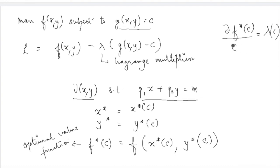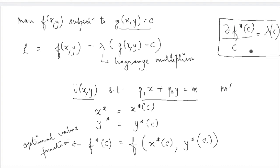The Lagrange multiplier tells you the rate of change of the optimum value of the objective function with respect to changes in the constraint constant c, where c is often indicative of the amount of resources available. For example, if this individual's income increases from m to m', then the change in utility is given by the value of lambda. This is called the shadow price of the resource.